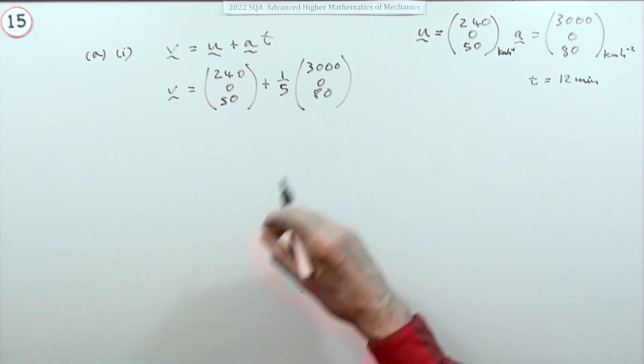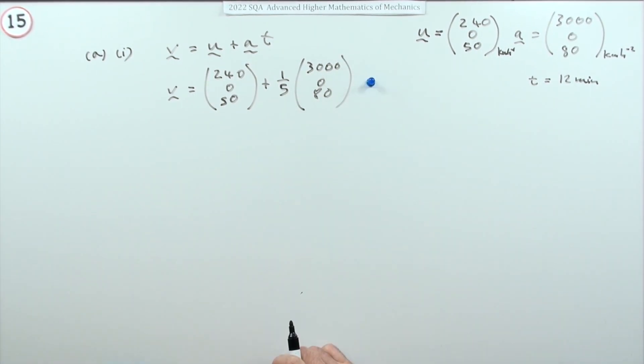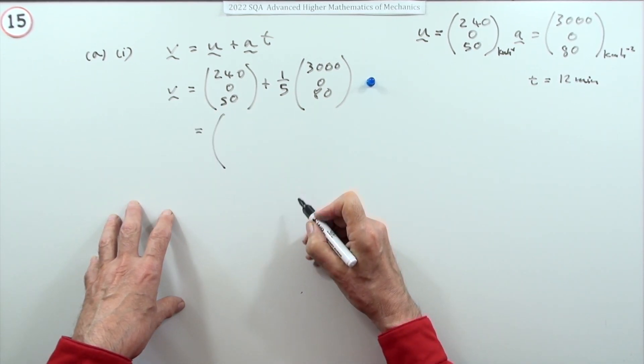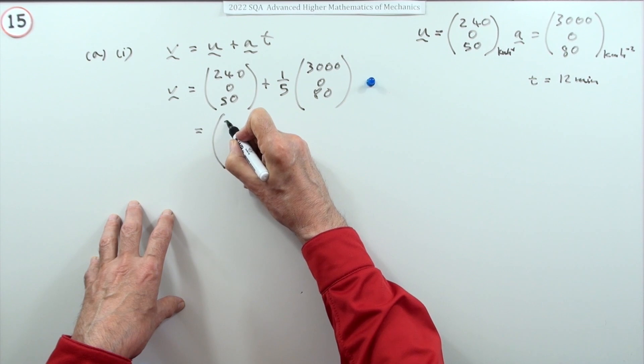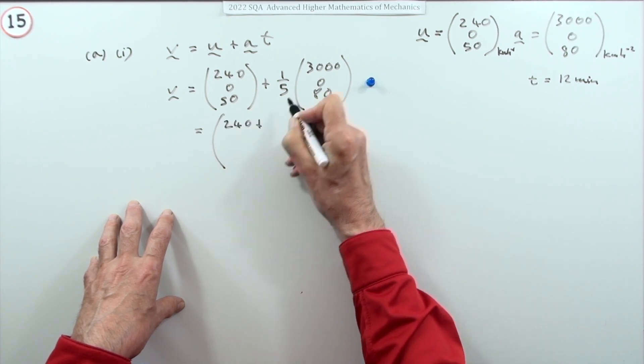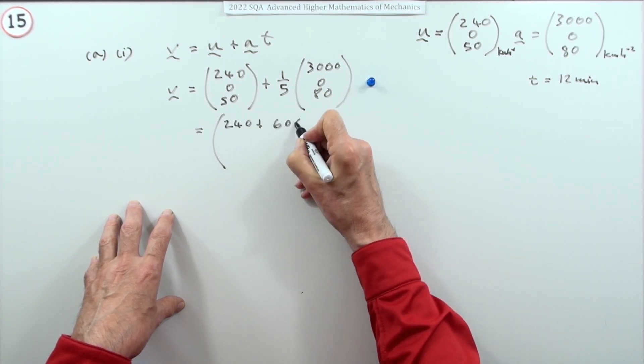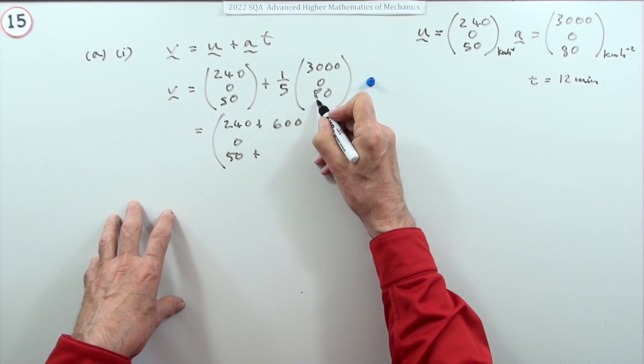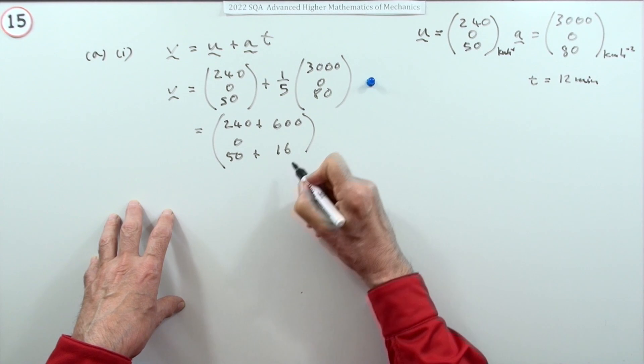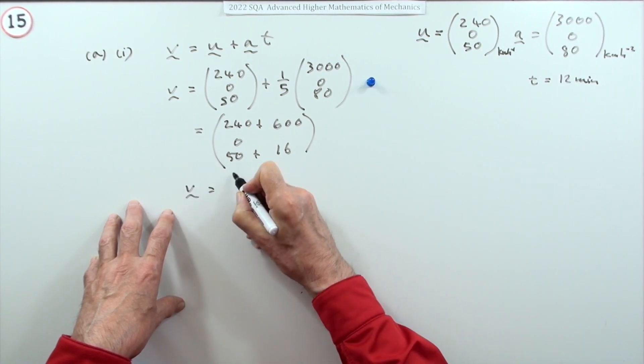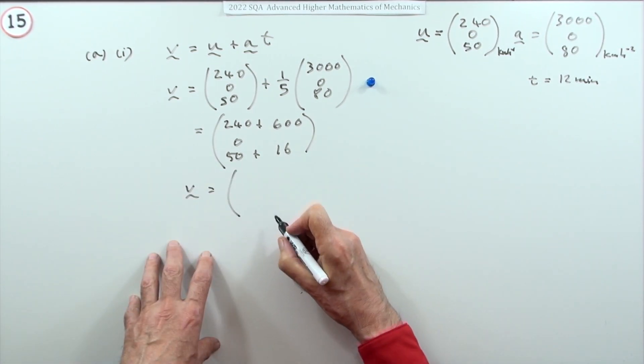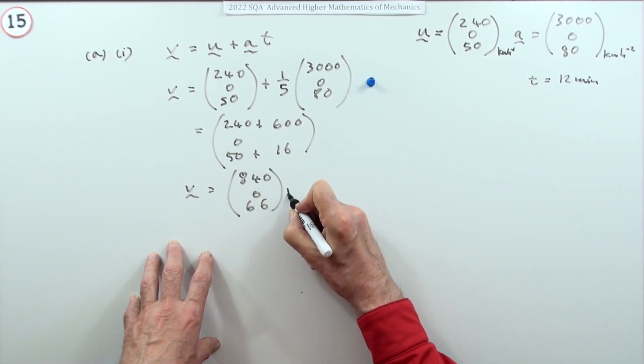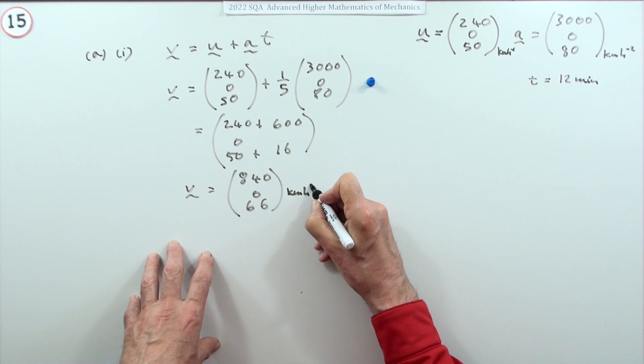Now doing that will be a mark. You just have to add it up. So 240 plus a fifth of 3000 is 600, giving 840. That's zero in the middle. And 50 plus a fifth of 80 is 16, giving 66.